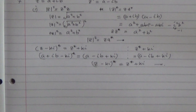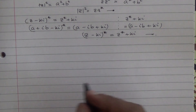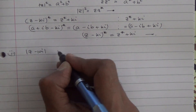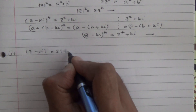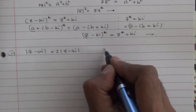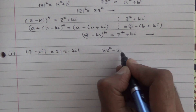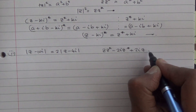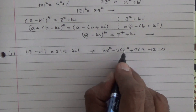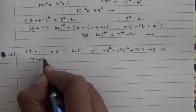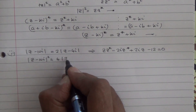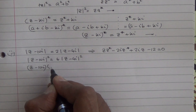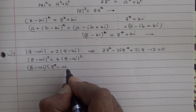Now for the second part, we need to show by squaring both sides that the given equation boils down to the required expression. The complex number equation is modulus of z minus 10i equals 2 times modulus of z minus 4i. So let's square these two: modulus of z minus 10i squared equals 4 times modulus of z minus 4i squared. When squaring, that becomes z minus 10i times the conjugate of z minus 10i, equal to 4 times z minus 4i times the conjugate of z minus 4i.